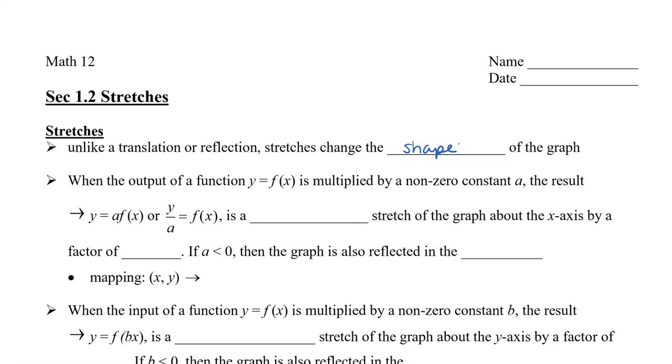So when the output of a function, let's say y equals f of x, is multiplied by a non-zero constant or non-zero number a, then we would have y equals a times f of x. Now we can divide both sides by a, and we would have y divided by a equals f of x. So in either case, whether we have a times f of x or y divided by a, this will give me a vertical stretch of the graph about the x-axis by a factor of a.